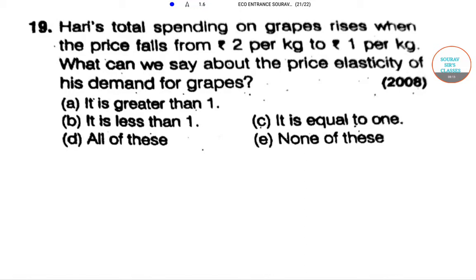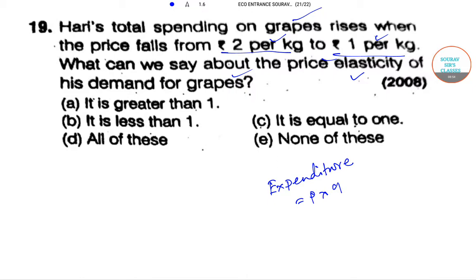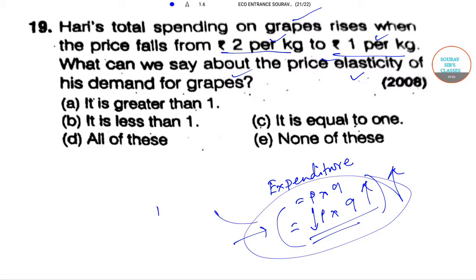Question 19: Hari's total spending on grapes rises when the price falls from 2 per kg to 1 per kg. What can we say about the price elasticity of demand for grapes? Our expenditure equals price times quantity. When price falls and quantity rises so much that total expenditure rises, this condition is satisfied only when elasticity of demand is greater than 1. So this option is the correct answer.